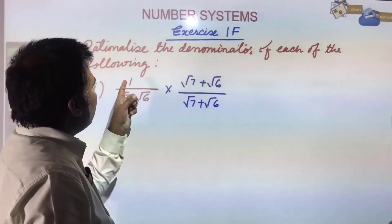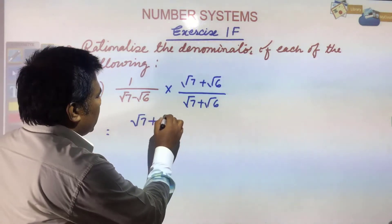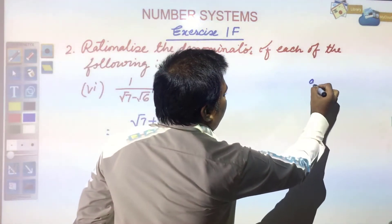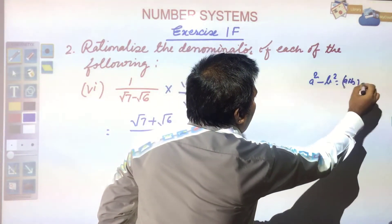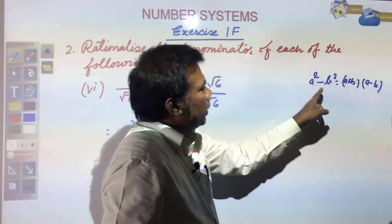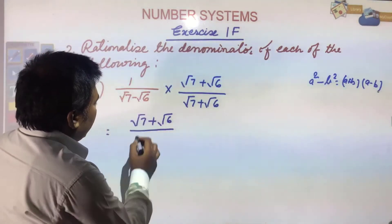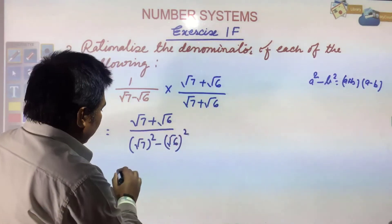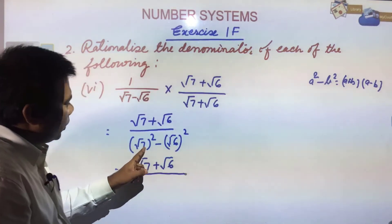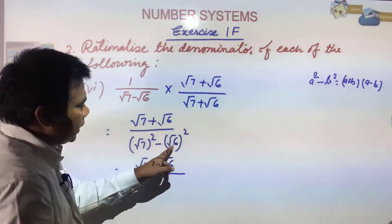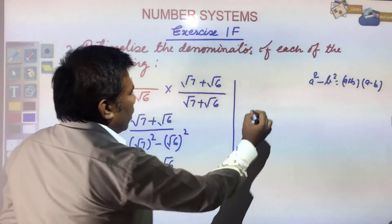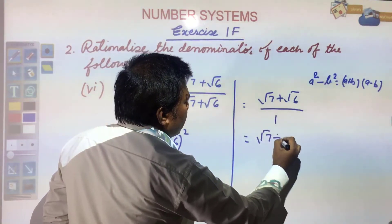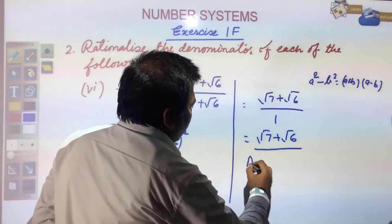So what we will do: multiply by (√7 + √6)/(√7 + √6). Multiplying 1 by √7 + √6 gives √7 + √6 in the numerator. In the denominator you have (a - b)(a + b), so using the formula a² - b² = (a+b)(a-b), it becomes √7² - √6² = 7 - 6 = 1. So the answer is √7 + √6.